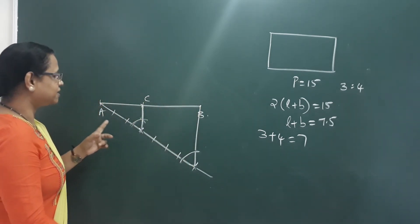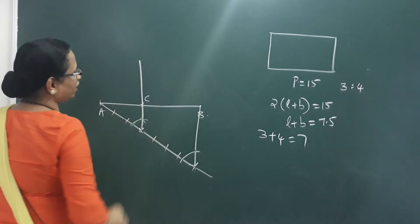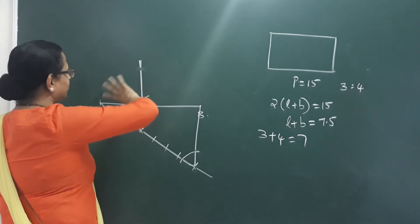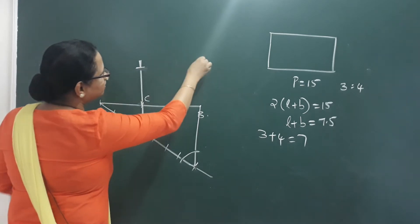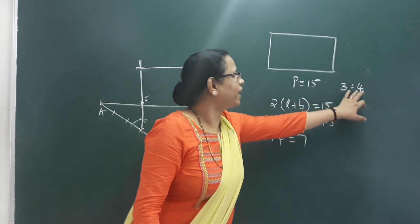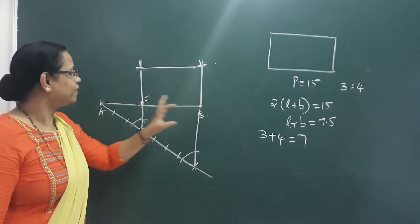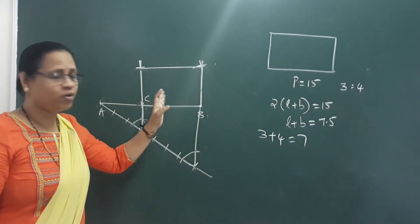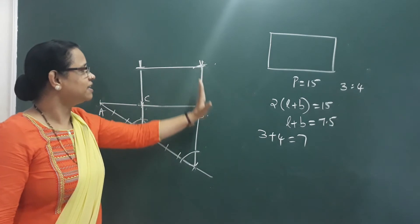We can put a rectangle here. We put a 90-degree angle model and construct the rectangle. The rectangle is formed with length E. So the rectangle is constructed for the ratio 3 is to 4. What is the perimeter? It's 7.5 on two sides, so total perimeter is 15. You can see the correct angles in the figure.